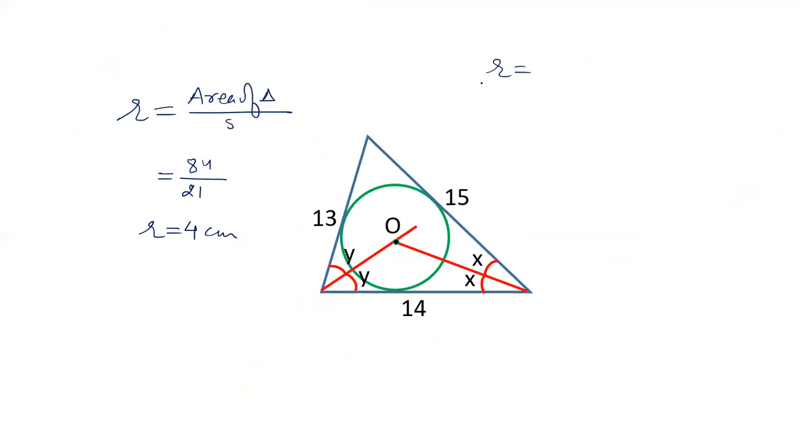So remember the formulas. Radius of incircle is area of triangle upon S. Radius of excircles are area of triangle upon S minus A, area of triangle upon S minus B, area of triangle upon S minus C. And here A, B, C are 3 sides of a triangle. S is semi-perimeter. So I hope friends you like this video. Like our videos and subscribe to our channel. Thank you.